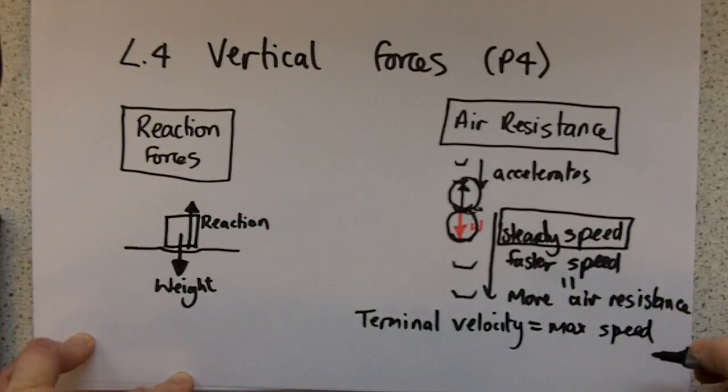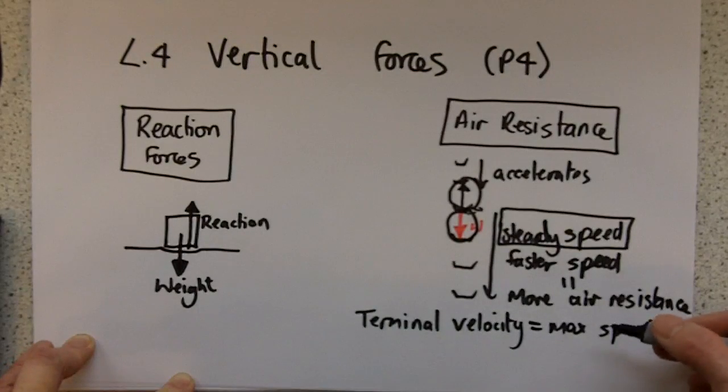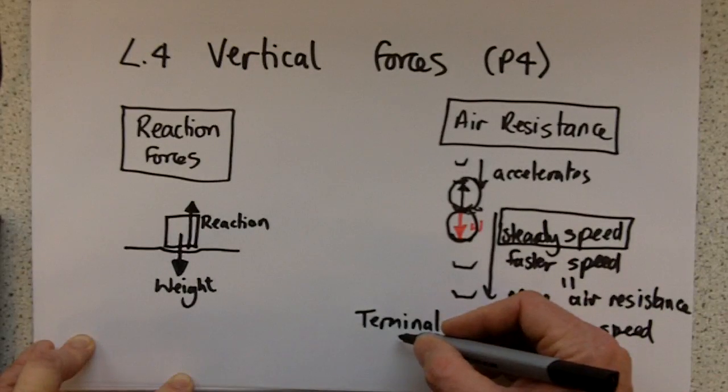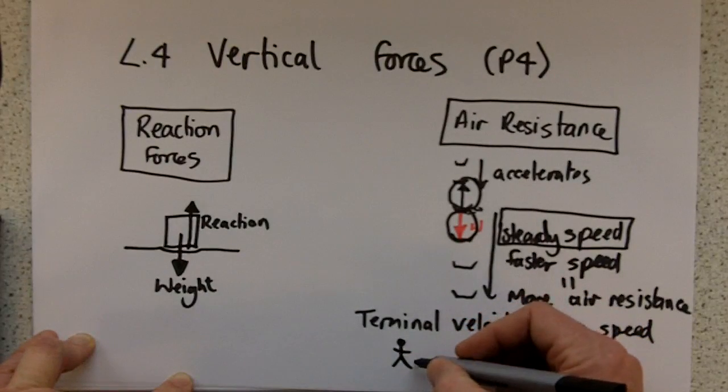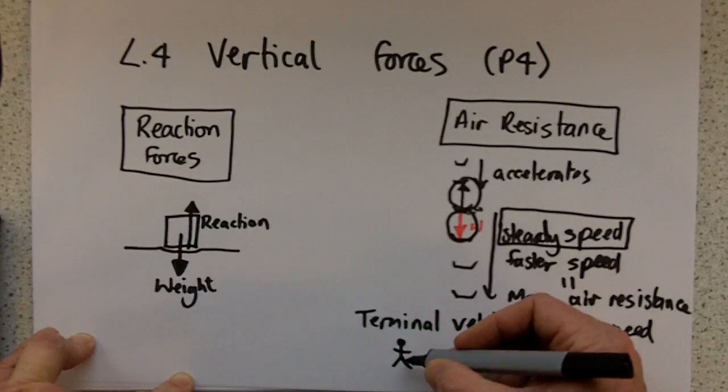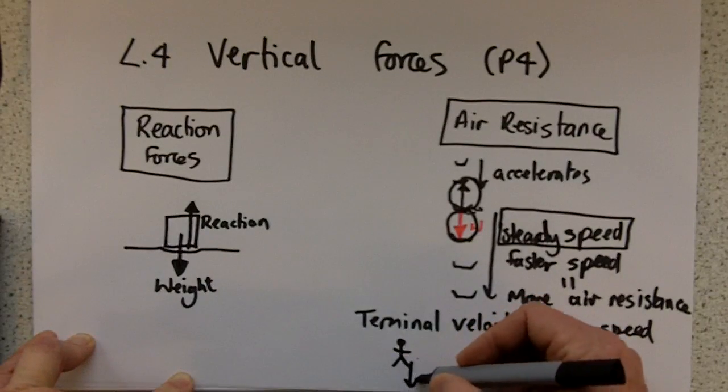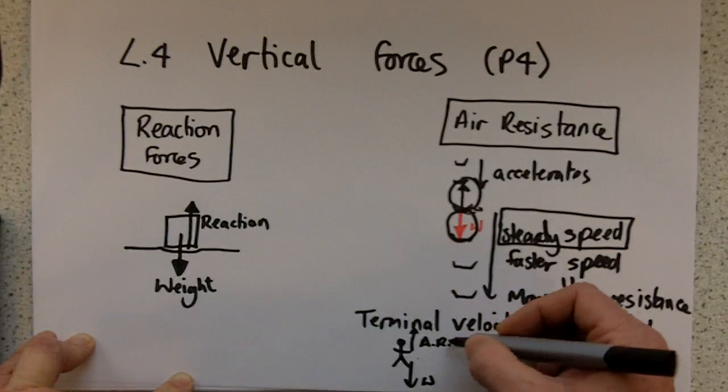And every object has its terminal velocity, and it really depends on two factors. It depends on the mass of the object and it depends on the amount of air resistance offered by the object. So different objects have different terminal velocities. A human who falls out of a plane without a parachute will have a very high terminal velocity, because they will need to go very fast in order for their weight force to be matched by their air resistance.